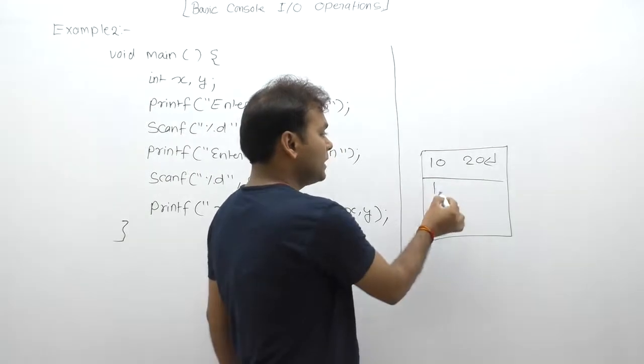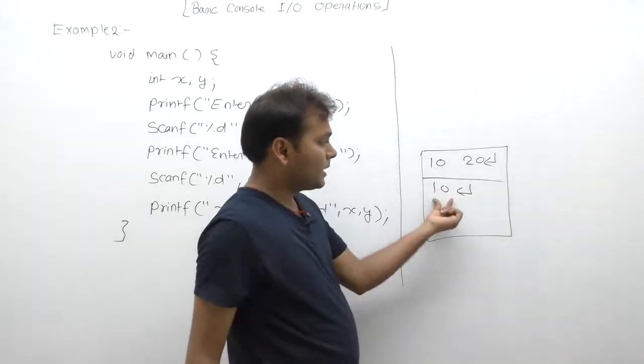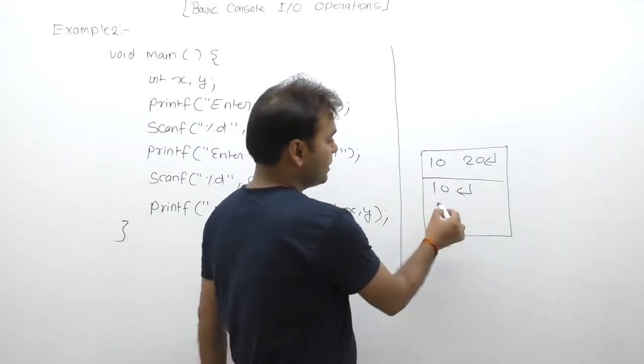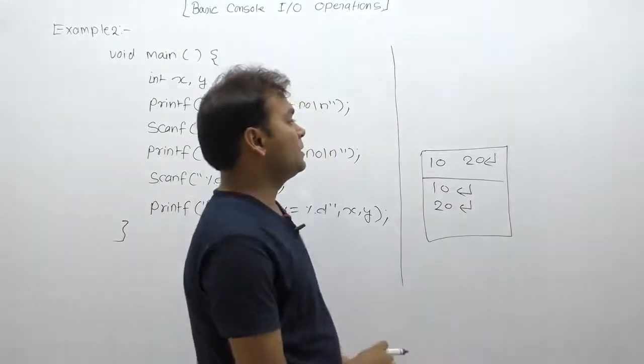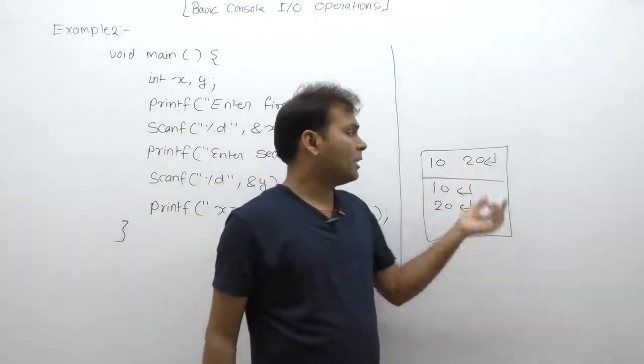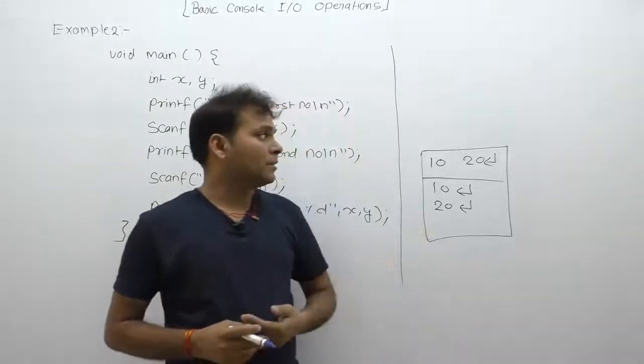Another way, two numbers separately line where we press the first one entering 10, then press enter, after then next time entering 20, press enter. This scanner function space or enter key will read. Space or space and enter key in this case separators or input separators.